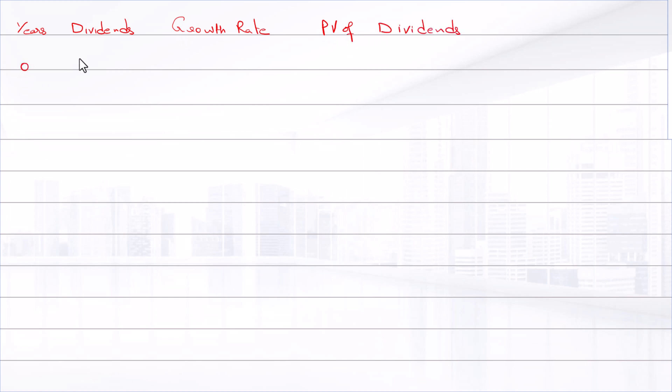Zero time period the dividend is $3.15, that is given in the question. First year the dividend growth rate will be 20%, so 3.15 times 1.2, the answer is $3.78.